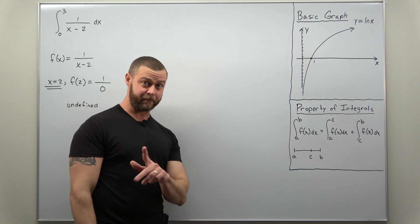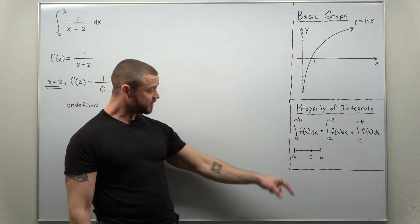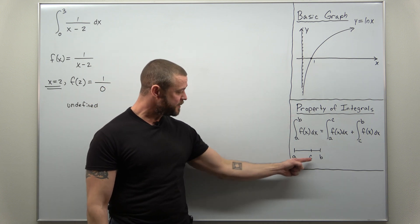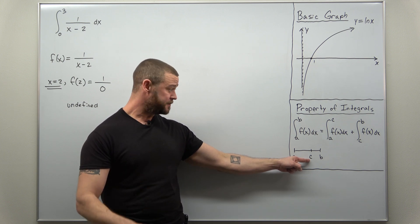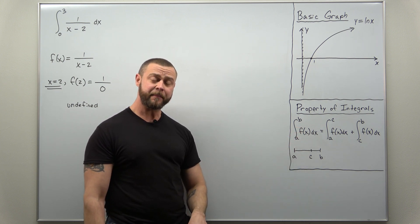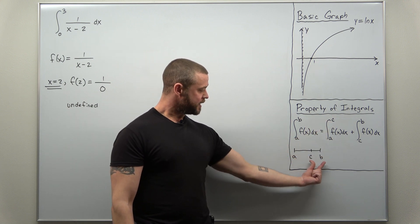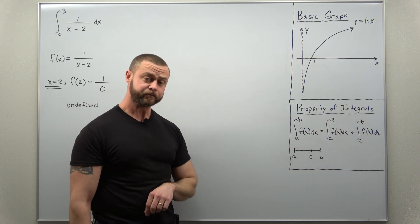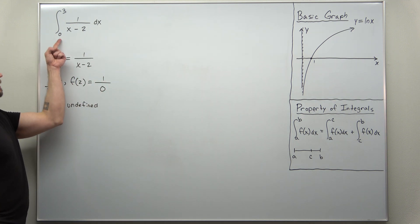This basically says if we have an integral from a to b with an intermediate value c between a and b, you can split this up into two integrals: an integral from a to c and then another integral from c to b. We're going to split this improper integral at 2.